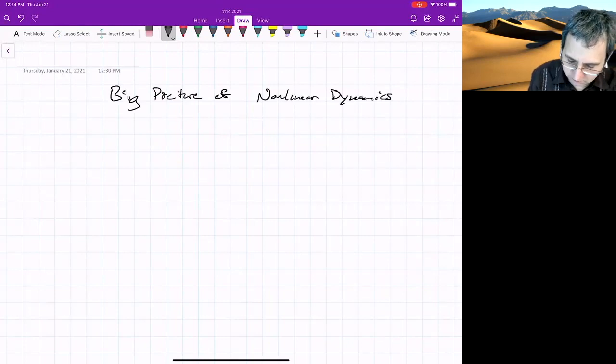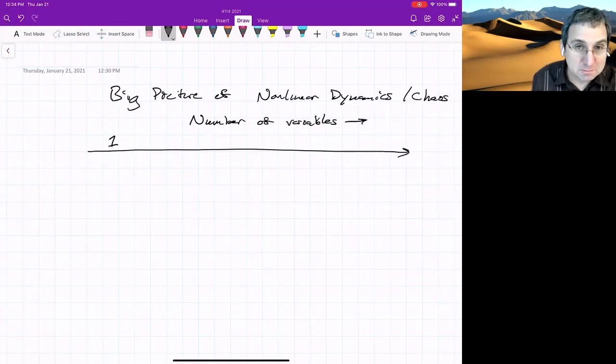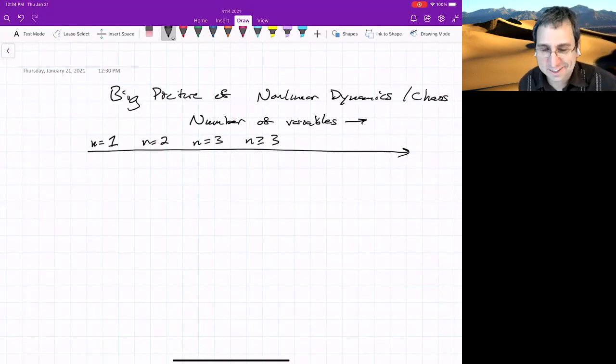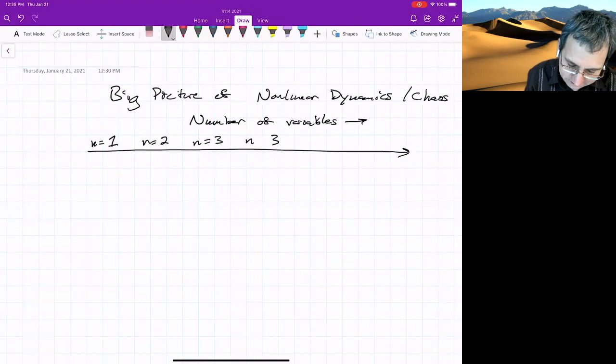I guess half of what I intend to write is linear dynamics. We'll plot along this axis the number of variables going from one variable, so n equals 1, n equals 2, n equals 3, and greater than or equal to 3. Greater than or equal to 4, I guess. We'll do greater than 3.